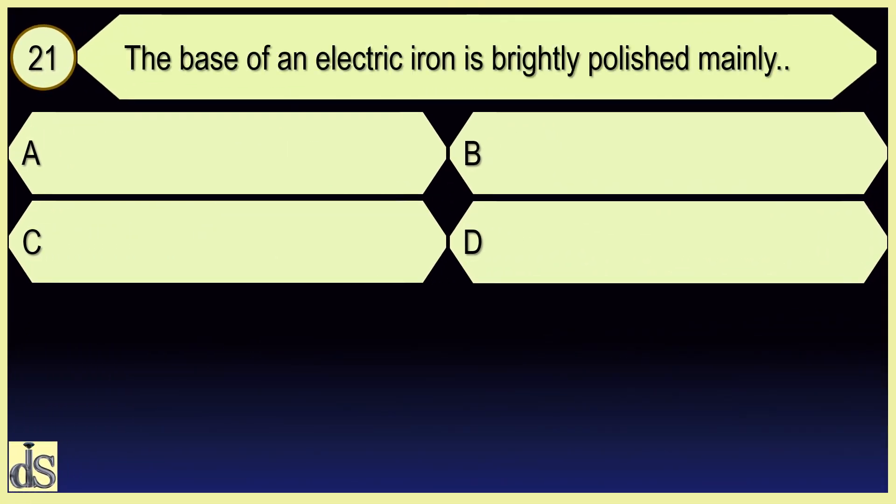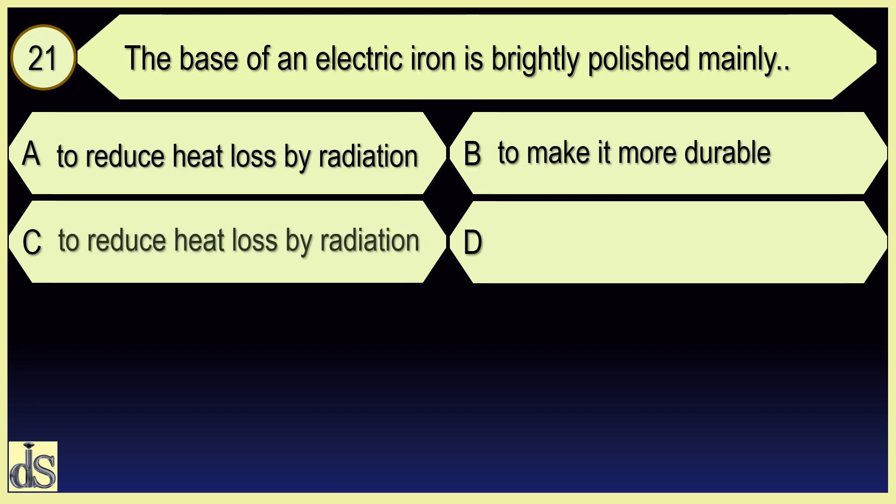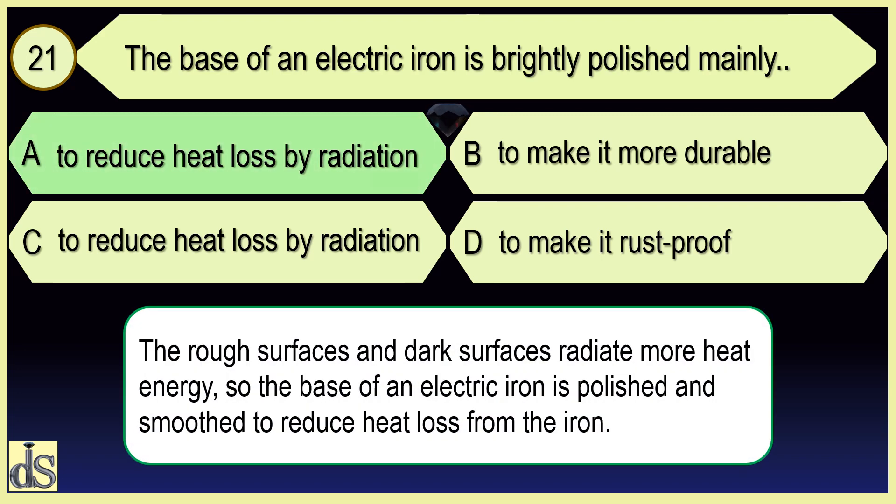The base of an electric iron is brightly polished mainly to reduce heat loss by radiation.